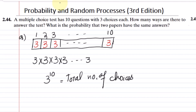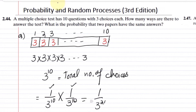Part 2 asks: what is the probability that two papers have the same answer? To find it, we find the probability of any one answer a first person has got. Similarly, the same question attempted by another person obtaining the same answer is also that probability. Since it is an AND problem, multiplying them together gives the probability that two papers have the same answer, which gives 3 raised to power negative 20.